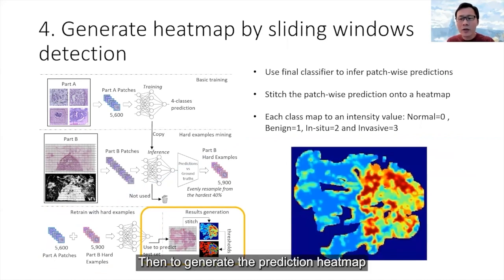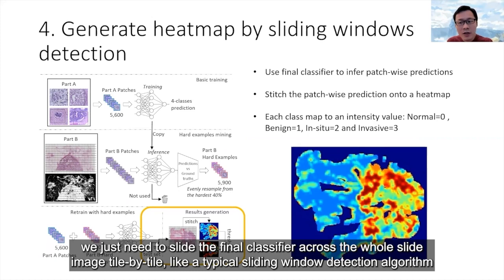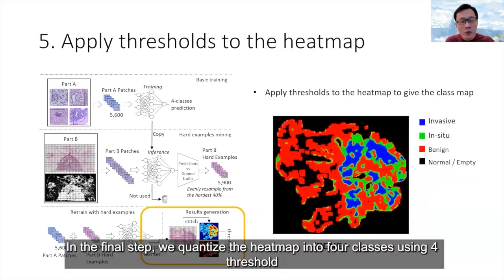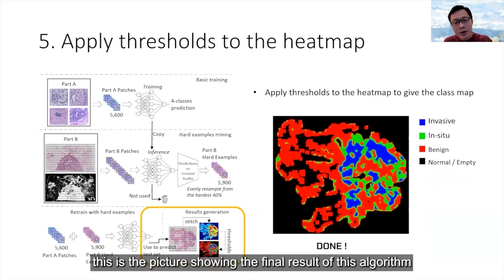To generate the prediction heat map, we slide the final classifier across the whole slide image tile by tile, like a typical sliding window detection algorithm. We plot the probability into a heat map showing cancer probability. At the final step, we quantize the heat map into a four-class map using four thresholds. This produces the final result of the algorithm.